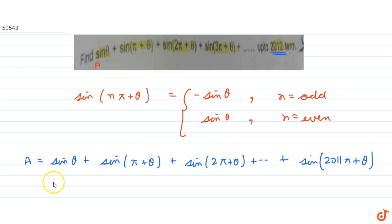Now using this property we defined, we get sin theta, sin(pi plus theta) this will be minus sin theta, plus this will be sin theta. Next term will be minus sin theta, plus so on.